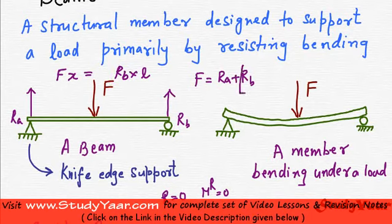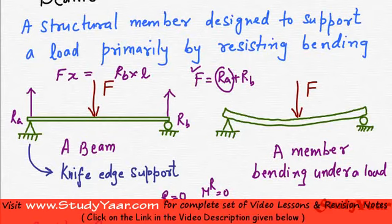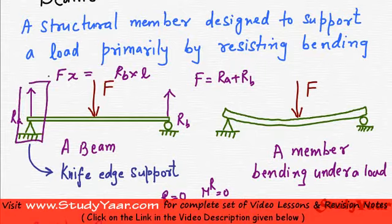Once you find out RB, F is known to you, you will be able to find out RA. Whenever you have a simple beam, you can find out the reactions given by its support.